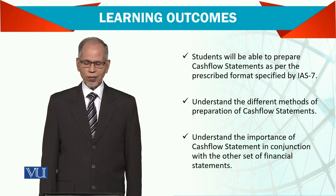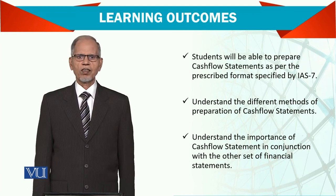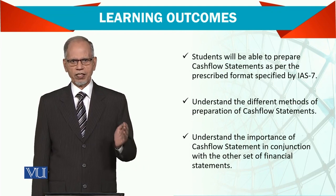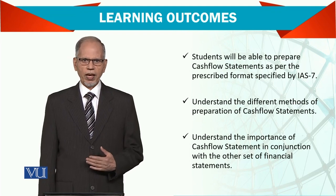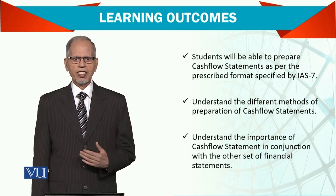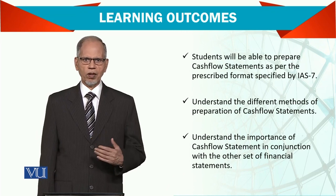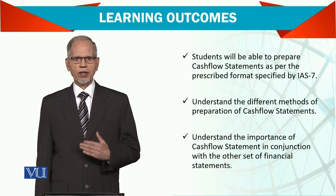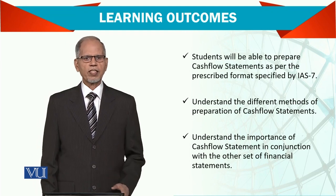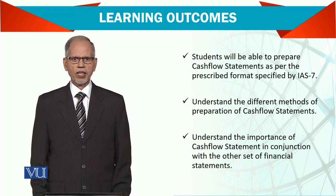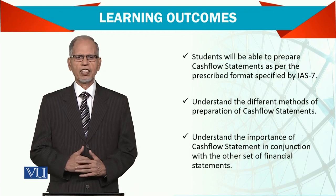In the indirect method, we do not start straight away from payments to suppliers. Instead, we start with the profit figure and make adjustments for items where no cash flow is involved. All those items where there is no money involved are added back to arrive at the final figure of cash flow from operating activities. Interestingly, the result is the same — both the direct and indirect methods give the same answer.